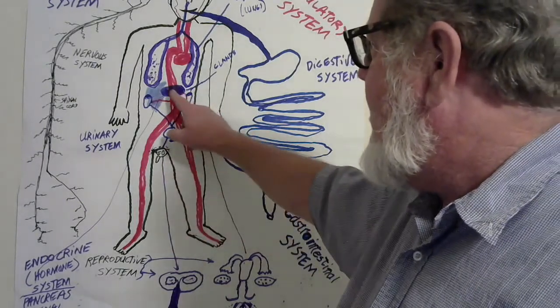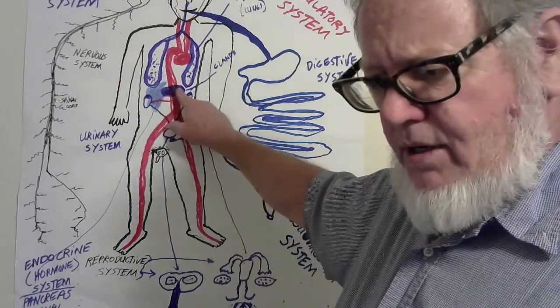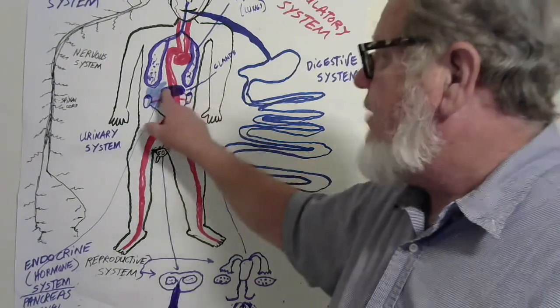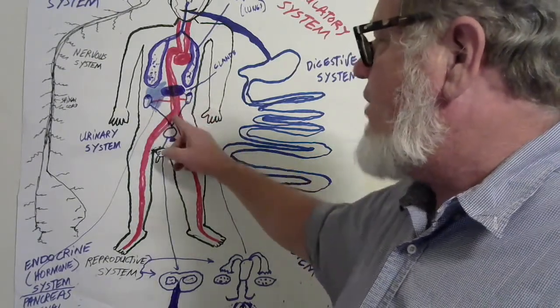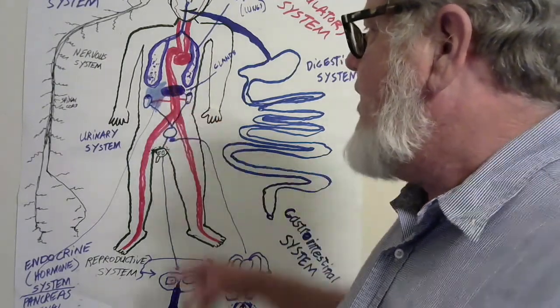The pancreas secretes the hormone insulin, which takes the glucose in our blood and moves it into our cells. Very important - it makes the insulin.